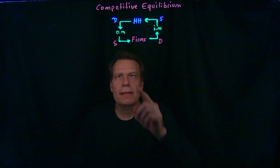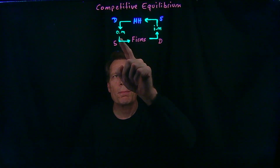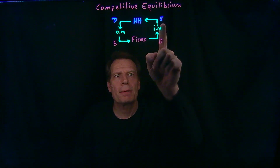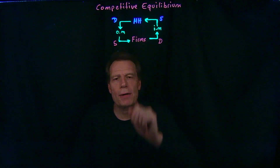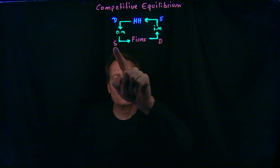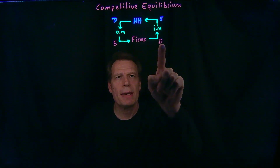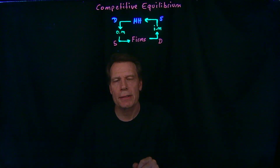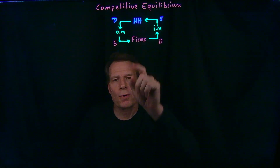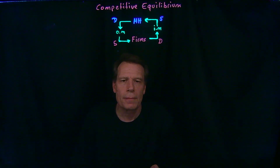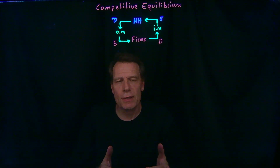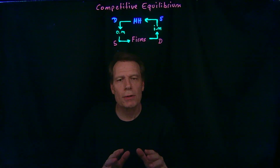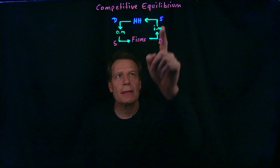We've now seen that demand in output markets and supply in input markets comes from households. And supply in output markets and demand in input markets comes from firms. And once we know where demand and supply in each of these markets comes from, we're ready to talk about equilibrium.